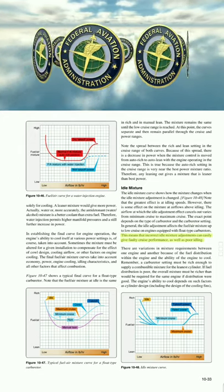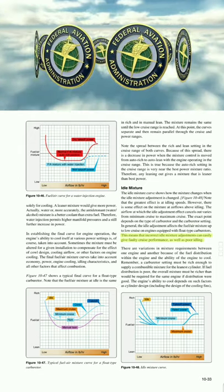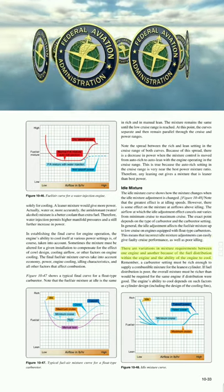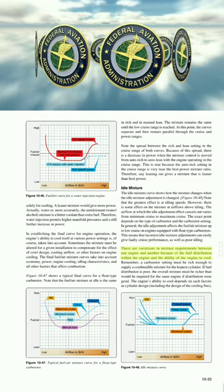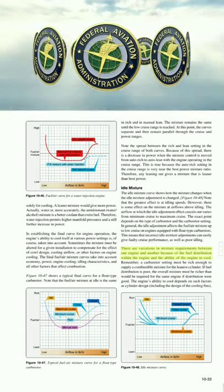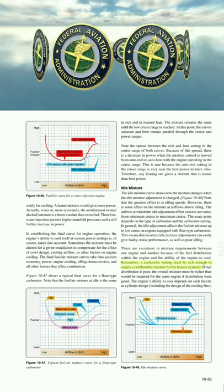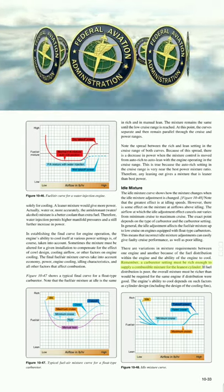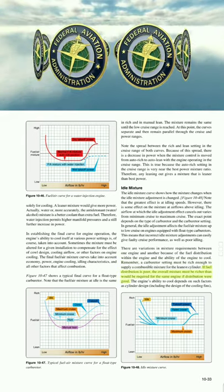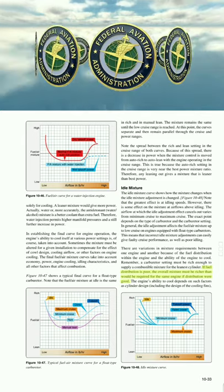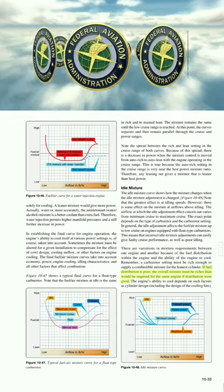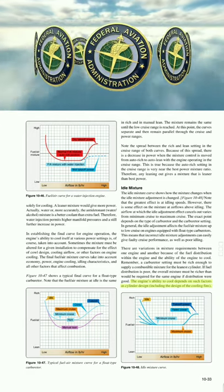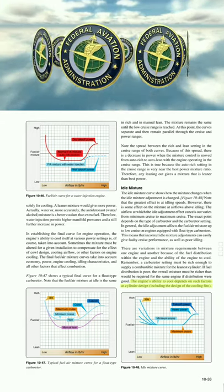Incorrect idle mixture adjustments can easily cause faulty cruise performance as well as poor idling. There are variations in mixture requirements between engines because of fuel distribution within the engine and the engine's ability to cool. A carburetor setting must be rich enough to supply a combustible mixture for the leanest cylinder. If fuel distribution is poor, the overall mixture must be richer than would be required with good distribution.